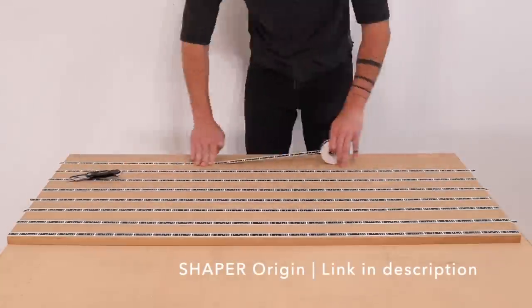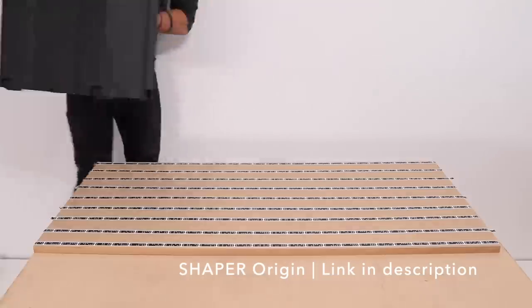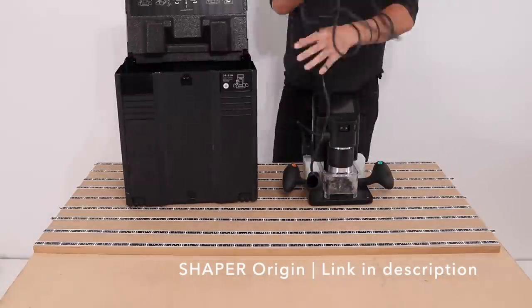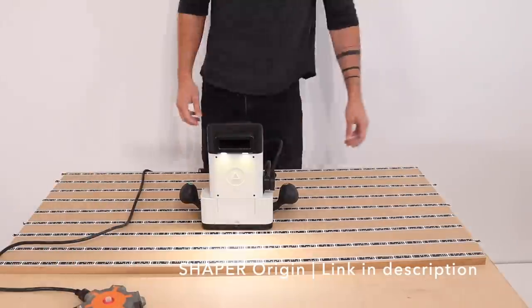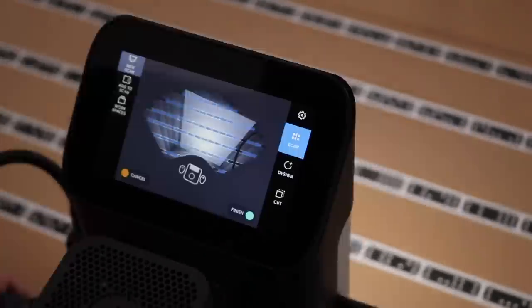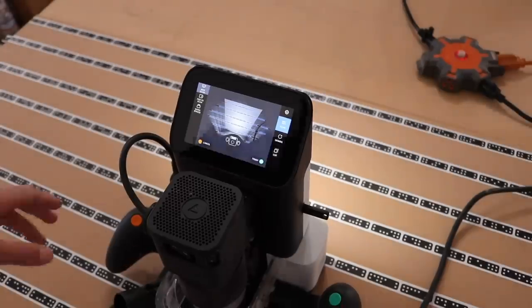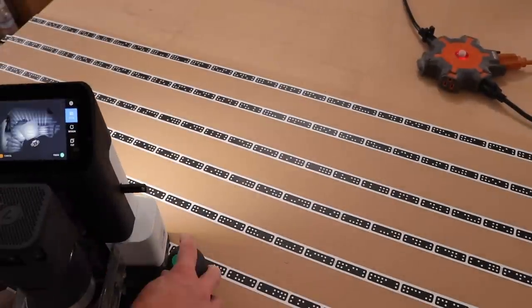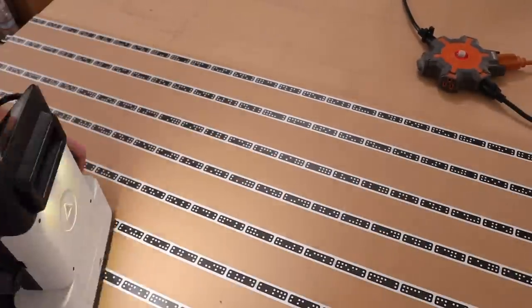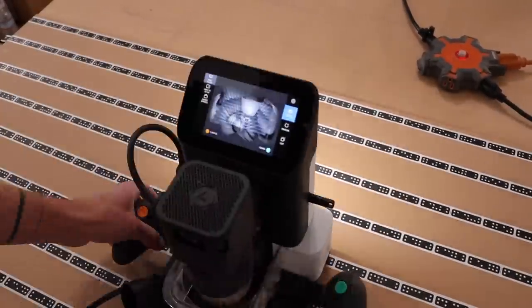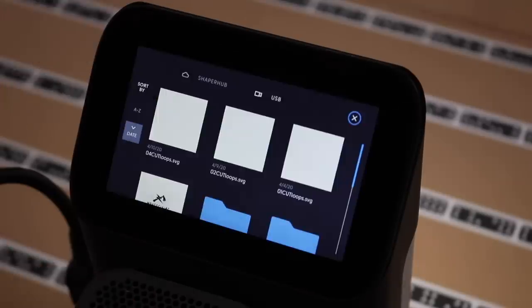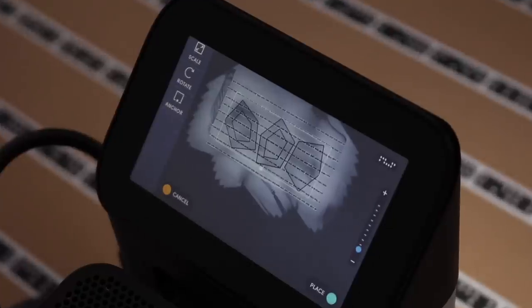I'm going to start by making MDF positive prototypes of the different pieces in the system. The Shaper Origin is a handheld CNC system that uses this domino-looking tape to superimpose a digital file, in this case the Illustrator drawings that I did, onto the work surface. On-board cameras and a screen allow you to scan in the particular layout of the domino tape so that the machine knows exactly where it is at all times.